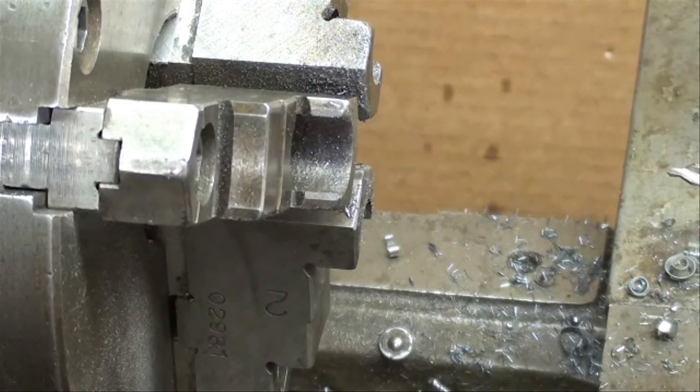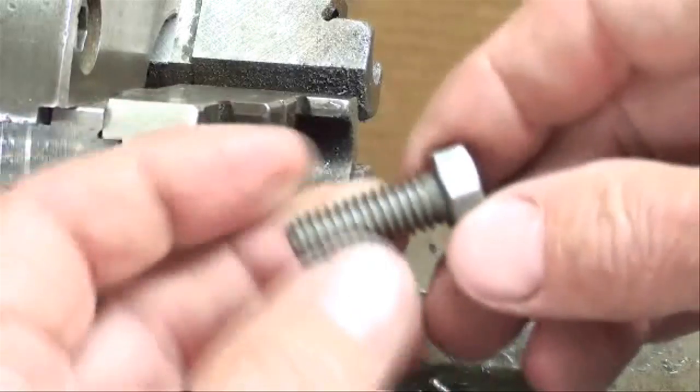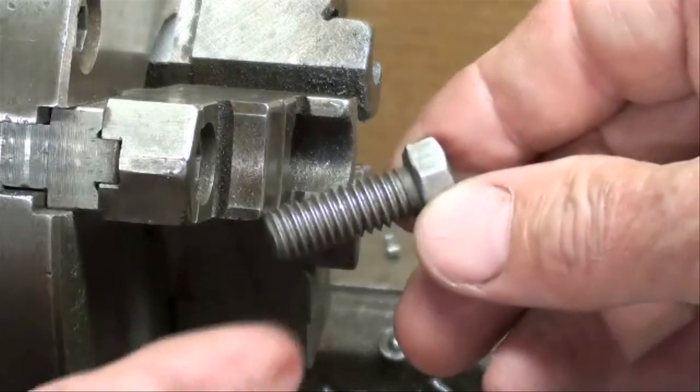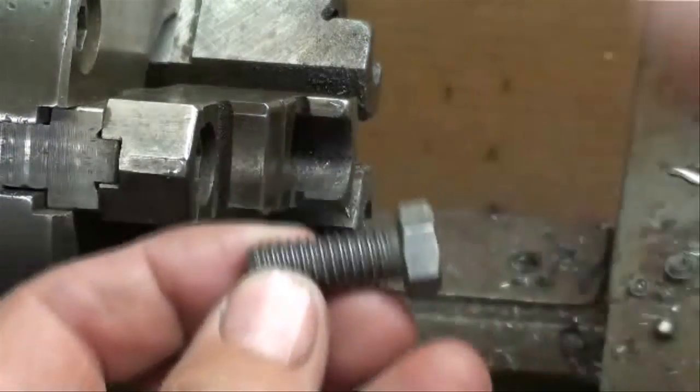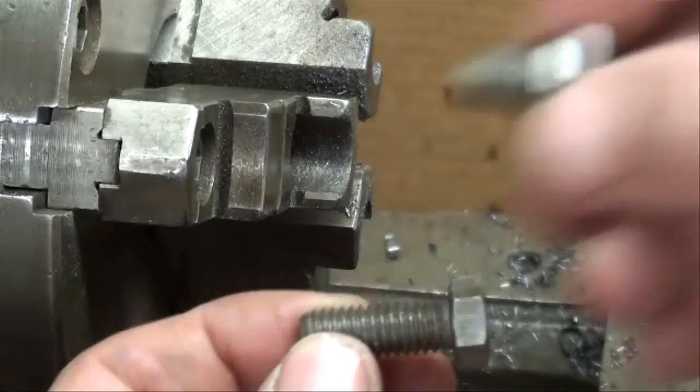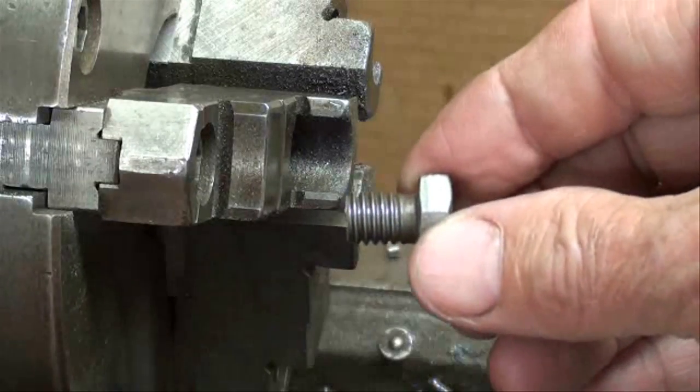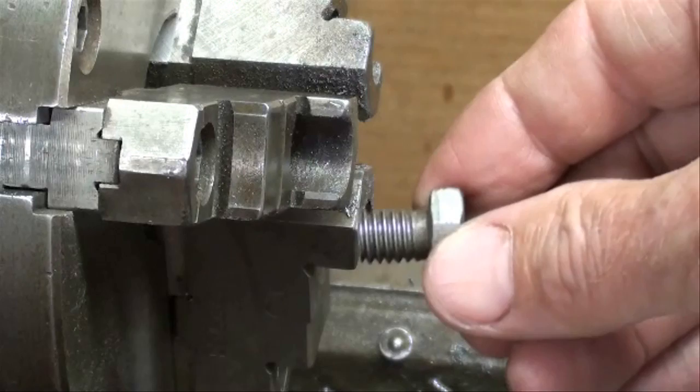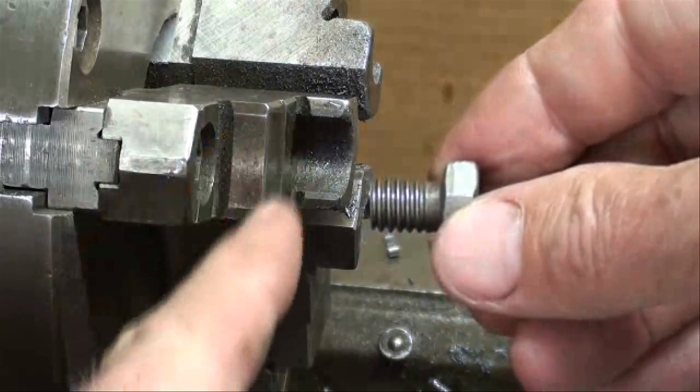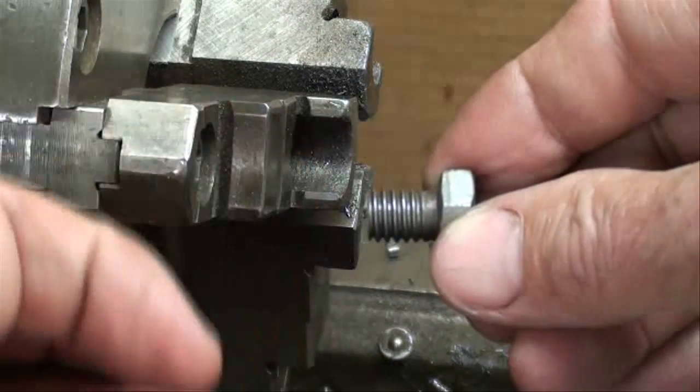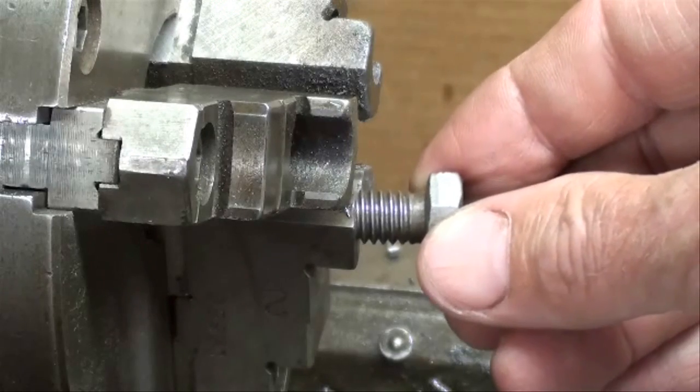Now we'll turn our attention to the bolt. I started with a 3/8-16 hex bolt and it's one inch long. I sawed it off so it's only about half inch long, just did that in the bench vise. I held it by the part that I was going to throw away so I didn't worry about damaging the thread.